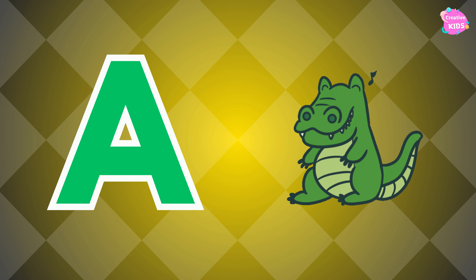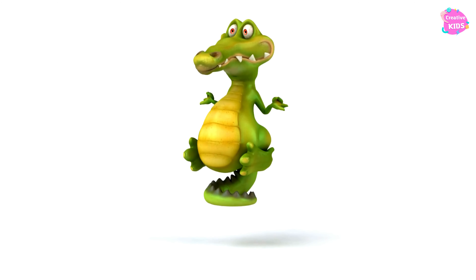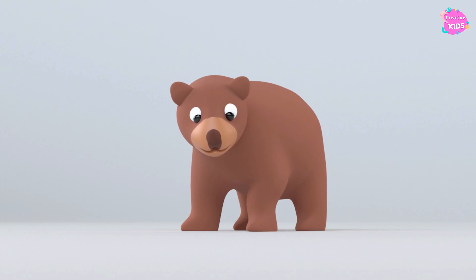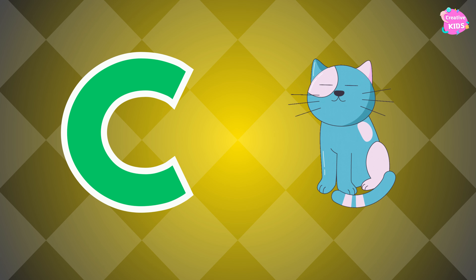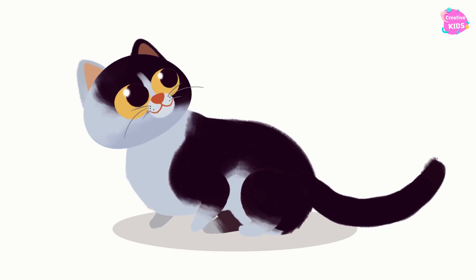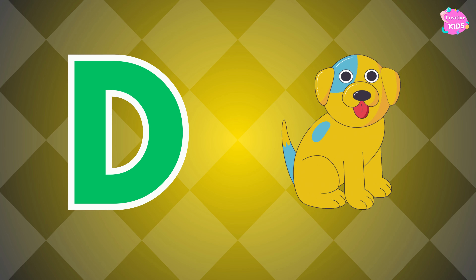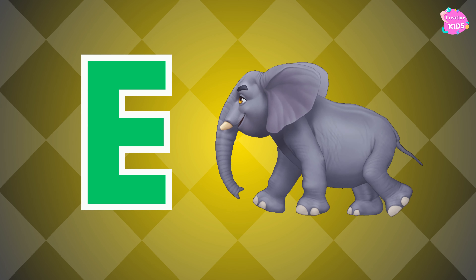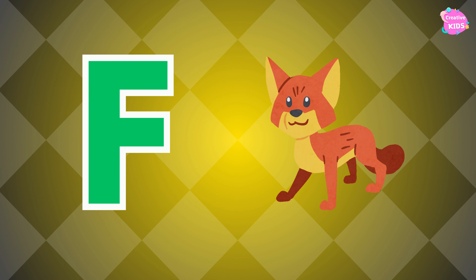A is for alligator, A-alligator, A-alligator, A is for alligator. B is for bear, B-b-bear, B-b-bear. B is for bear. C is for cat, C-c-cat, C-c-cat. C is for cat. D is for dog. E is for elephant, elephant. E is for elephant.